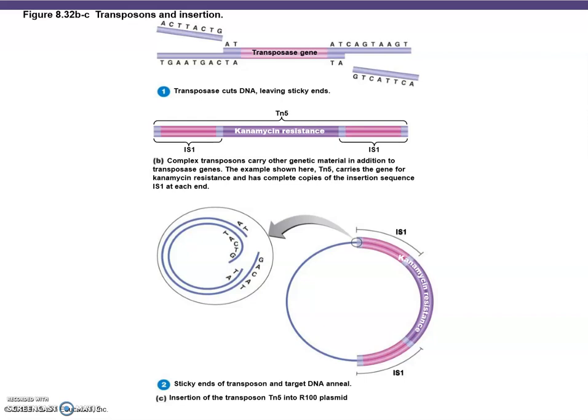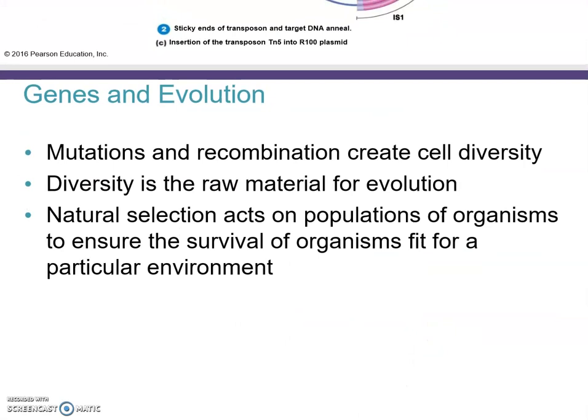Here's an example of how a transposable gene works. Transposable genes are also called jumping genes or movable genes. In this example, the kanamycin resistance gene is moved and inserted into a circular piece of DNA, so now that circle carries the information for kanamycin resistance. This connects to the broader topic of genes and evolution.